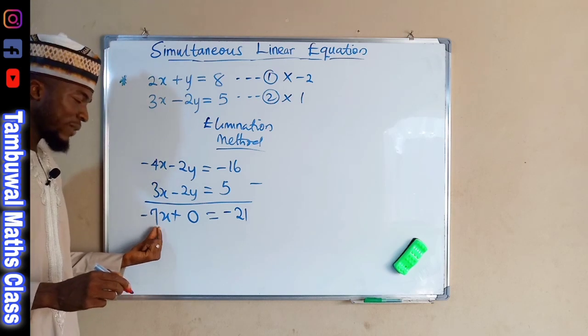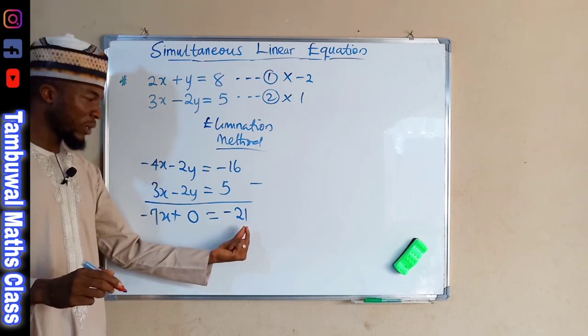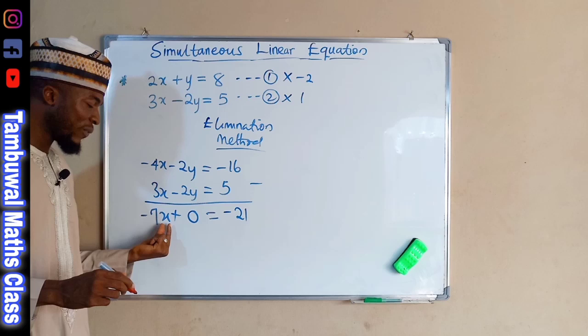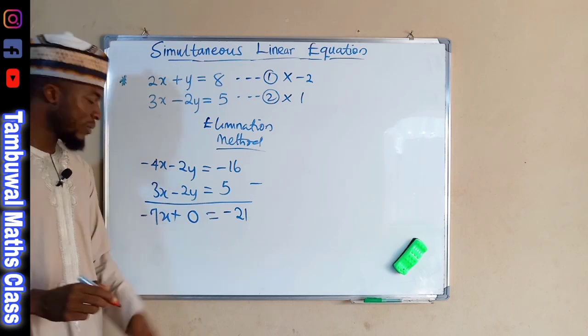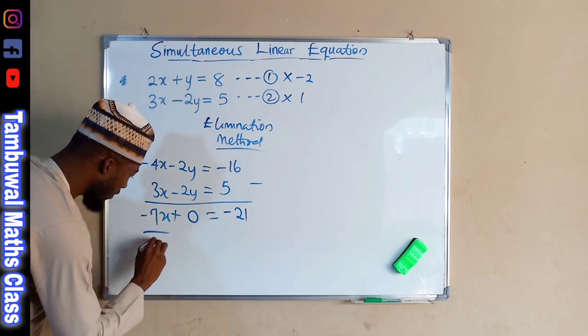You can clearly see that negative 7X is equal to negative 21. So, to find what value is X, we are going to divide both sides of this equation by negative 7.